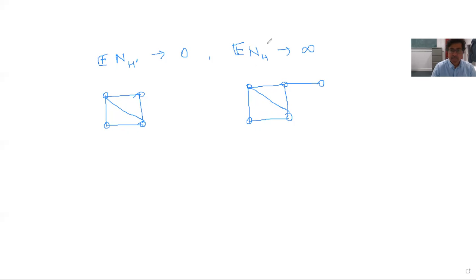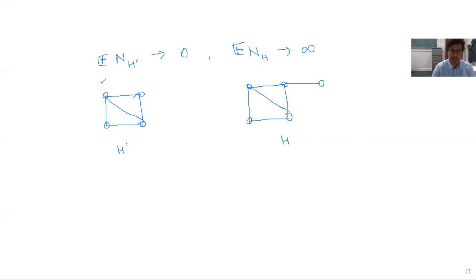This suggests: if the expected number of copies of H is tending to infinity, we should see at least one — in fact lots. But every time there's a copy of H, there must also be a copy of H' — simply ignore the hook vertex and edge. Yet the expected number of copies of H' goes to zero, so by Markov's inequality with high probability there's no copy of H' in G(n,p). But there are lots of copies of H — that's a paradox! We cannot have a copy of H without also having a copy of H'. I'll end here and ask you to think about this paradox before the next lecture.